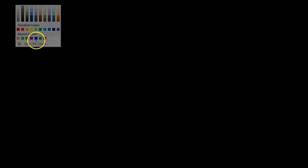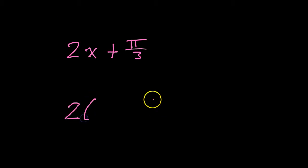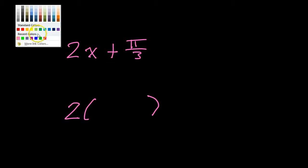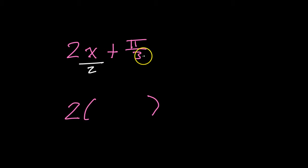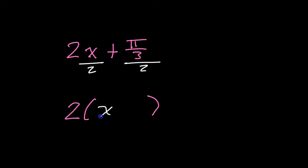Let's apply that to expressions that have radians in them. Say if I had 2x plus π over 3. That π/3 is not going to be the phase shift until we pull that 2 outside of parentheses. If I pull out the 2, to find what's inside I divide everything by 2. The 2's cancel, leaving x, and π/3 divided by 2 gives π/6.